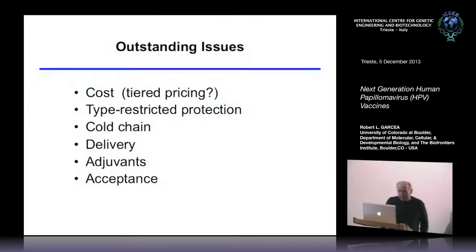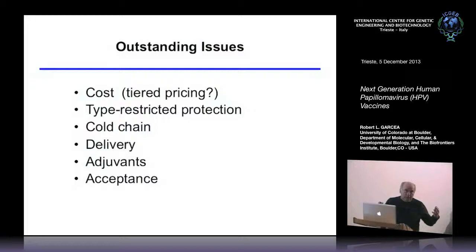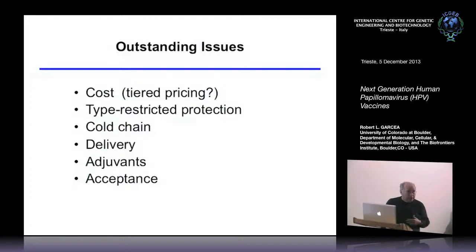Cold chain is a problem with most vaccines. Polio vaccine is very temperature sensitive — if you allow it out of the refrigerator for over three hours, it's probably inactivated. This is a very difficult problem for delivering vaccines in places without electricity or refrigerators, like hot climates — Central Africa, Pakistan, where they're having polio outbreaks right now.